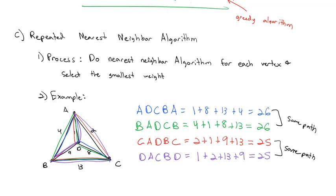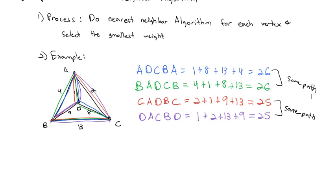They just have different starting points. They might go the opposite direction, but you're really covering the same vertices in the same order. So if we're going to identify our most efficient option, we could choose either the one starting with C or the one starting with D. We could say C, A, D, B, C is our shortest path with a weight of 25. You could also choose the other one, D, A, C, B, D, with a weight of 25. That would be just fine as well.